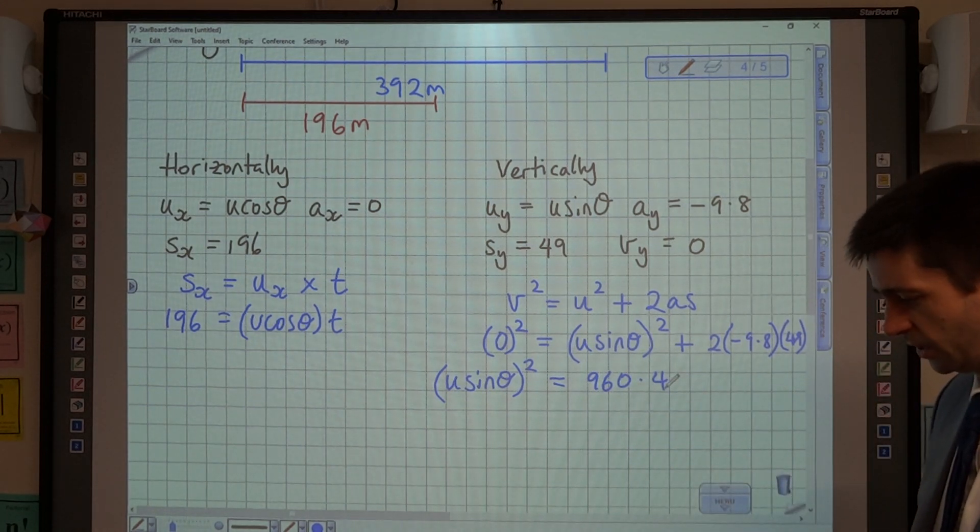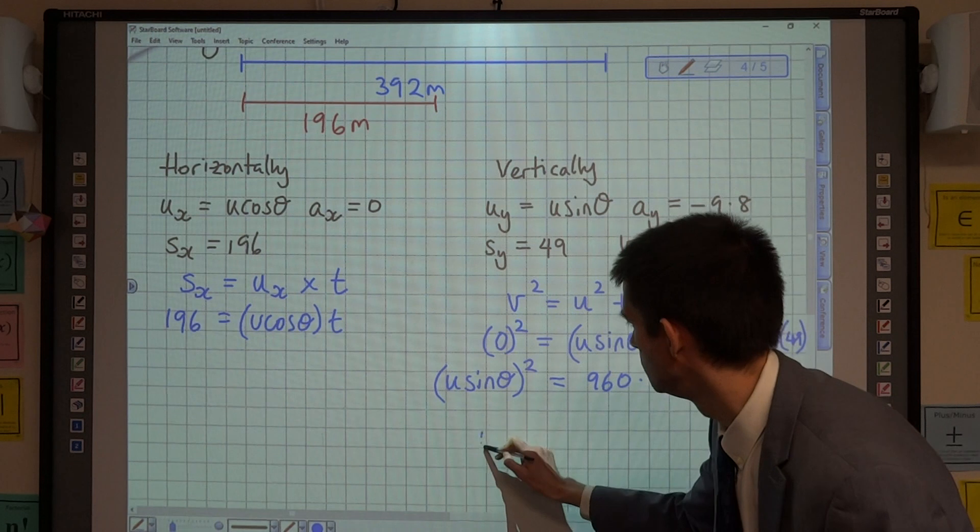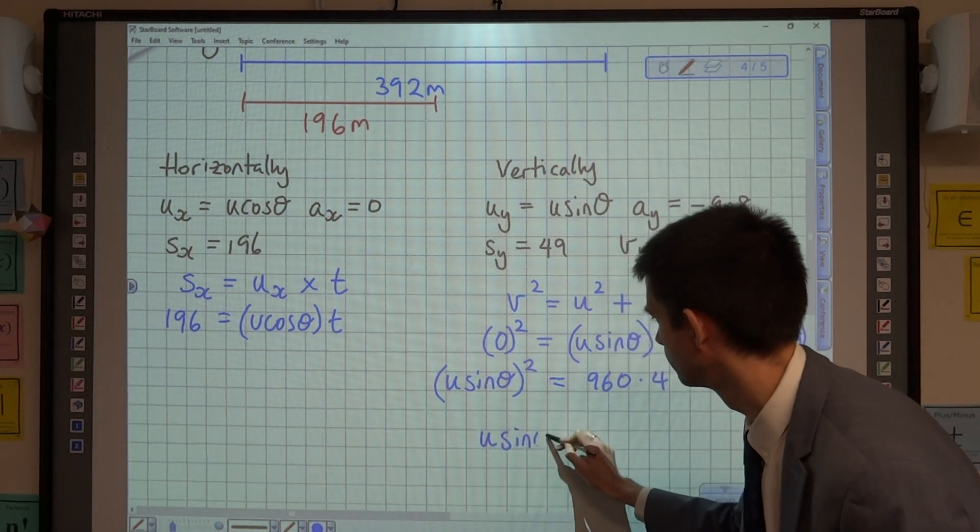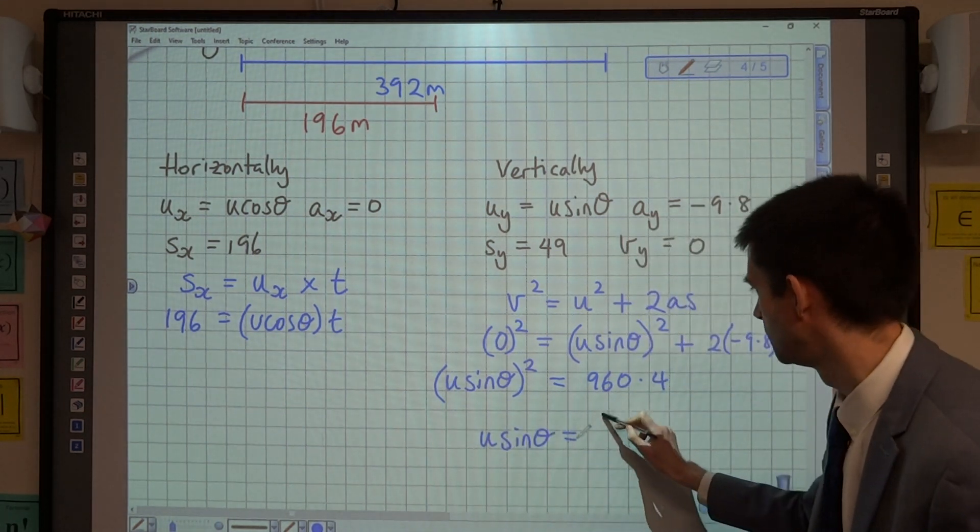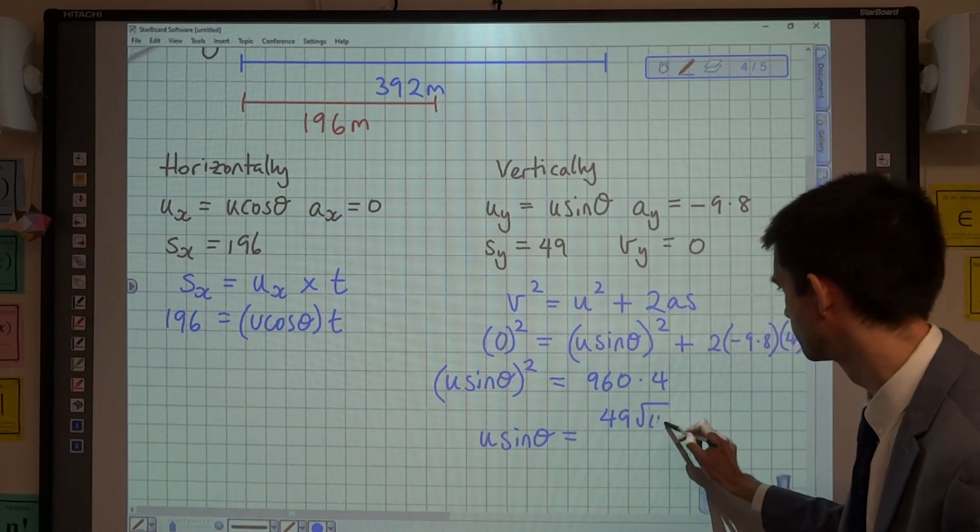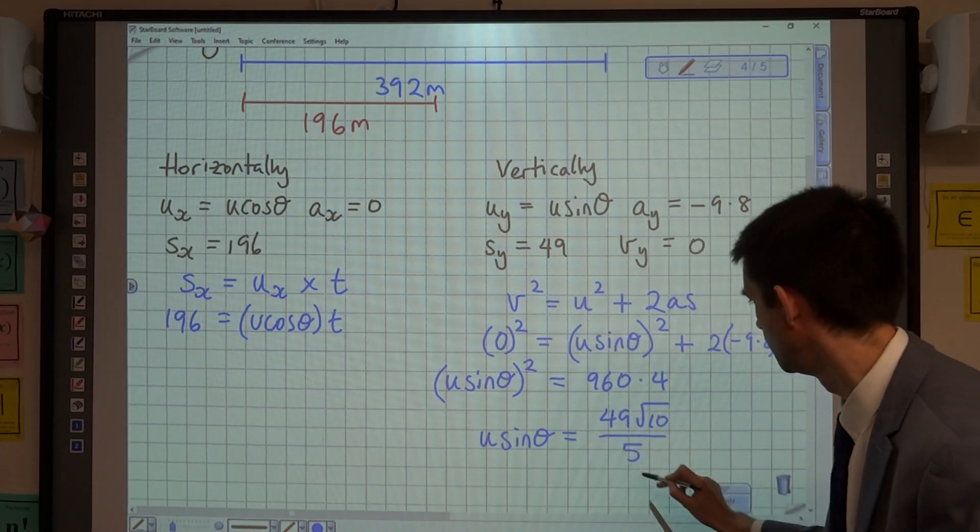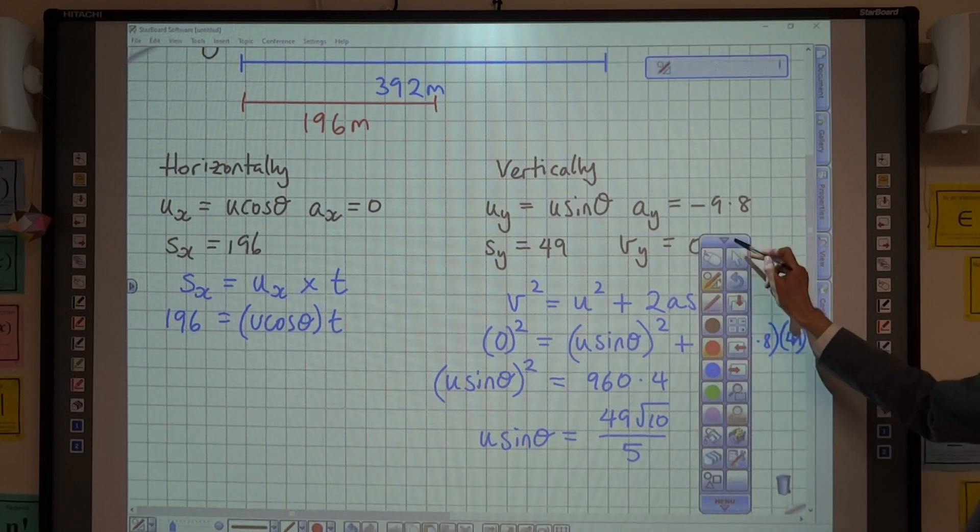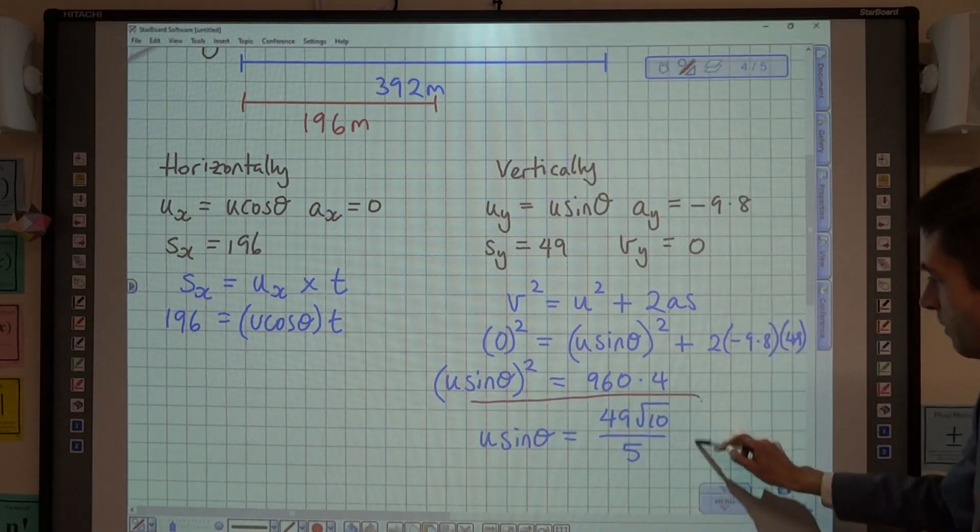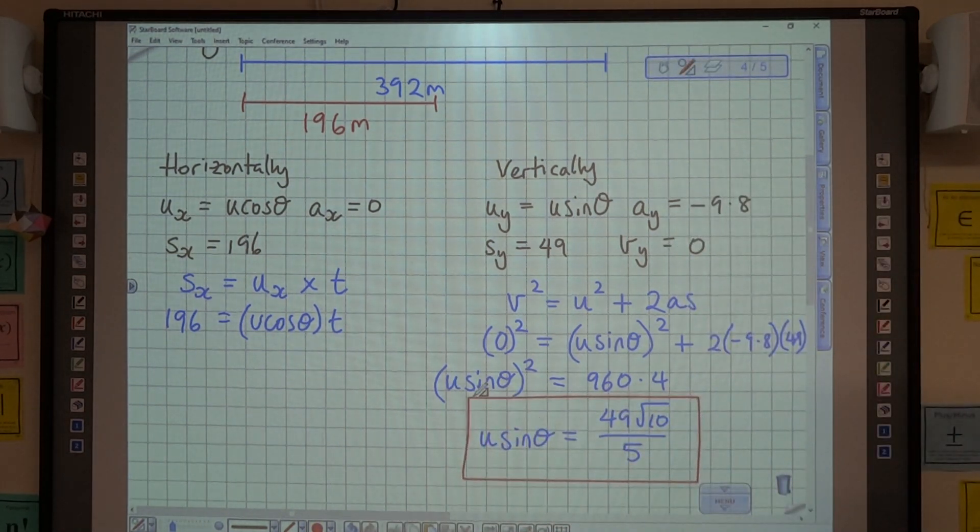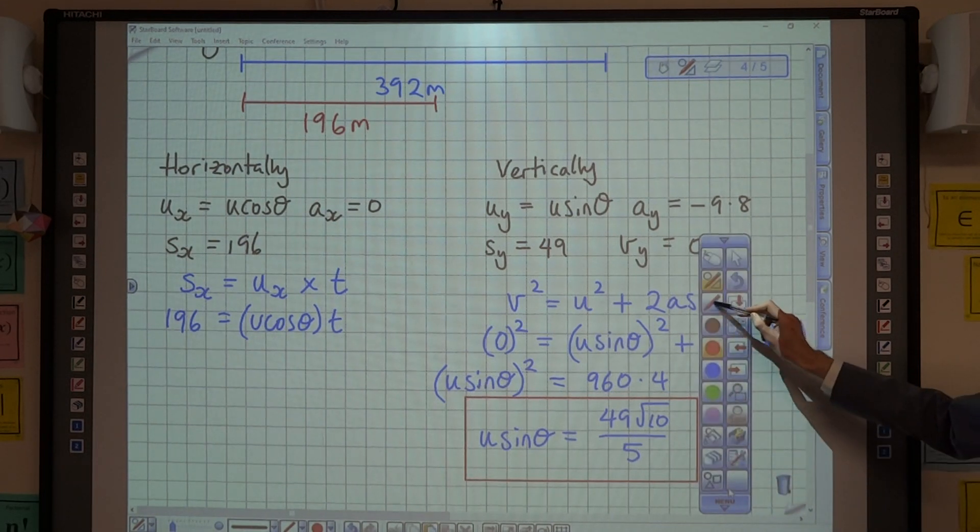And square rooting that, that tells me that u sin theta is 49 root 10 over 5. Beautiful. I'm going to leave it exact, and I'm going to put a big red box around it, because that is going to be important information for me later on.